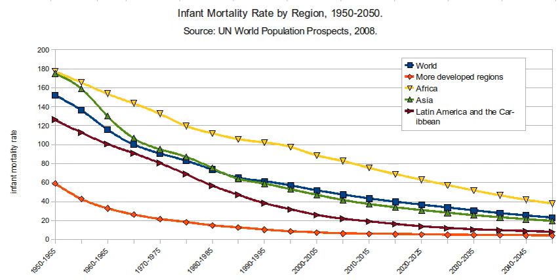An additional program that aims to reduce infant mortality is the Best Babies Zone based at the University of California, Berkeley. The BBZ uses the life course approach to address the structural causes of poor birth outcomes and toxic stress in three U.S. neighborhoods. By employing community-generated solutions, the Best Babies Zone's ultimate goal is to achieve health equity in communities that are disproportionately impacted by infant death.